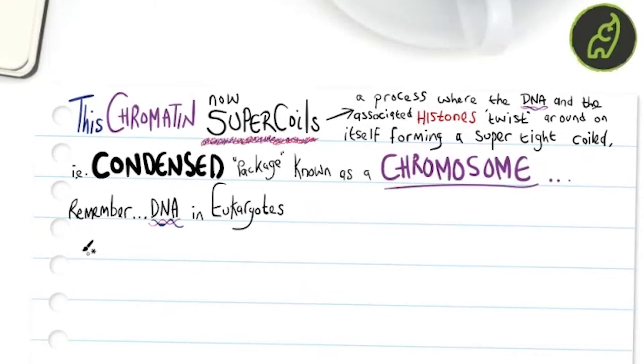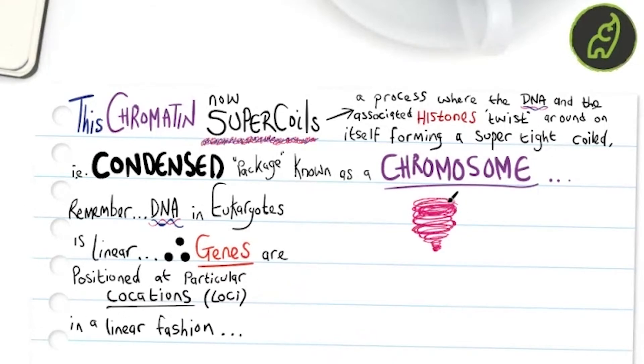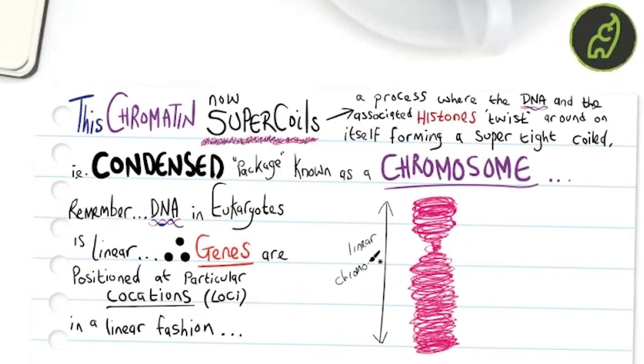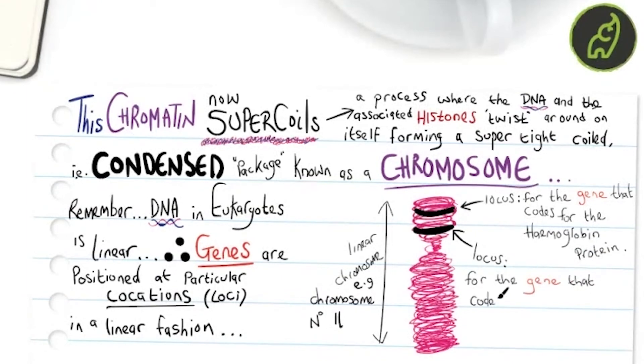Now remember, DNA in eukaryotes is linear; therefore genes are positioned at particular locations, loci, in a linear fashion. So if we take a look at a typical linear chromosome—for example, chromosome number 11—we're able to see the locus for the gene that codes for the hemoglobin protein, and we can also see the locus, the position for the gene that codes for insulin.